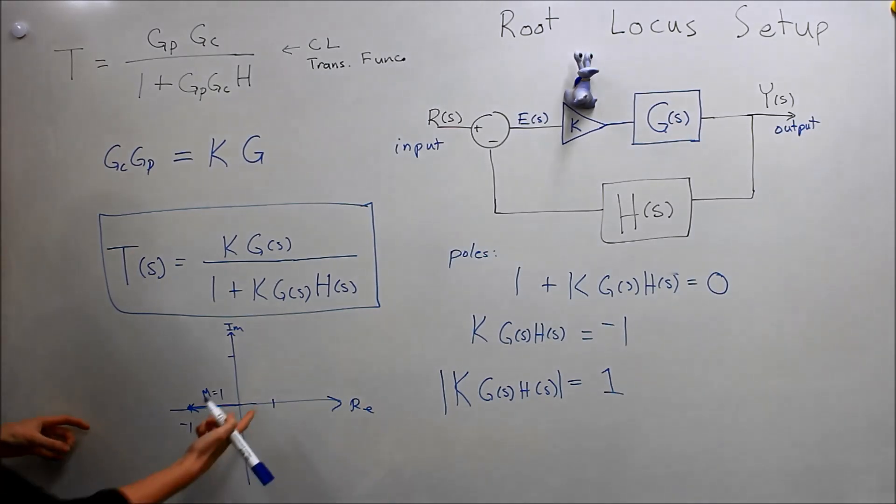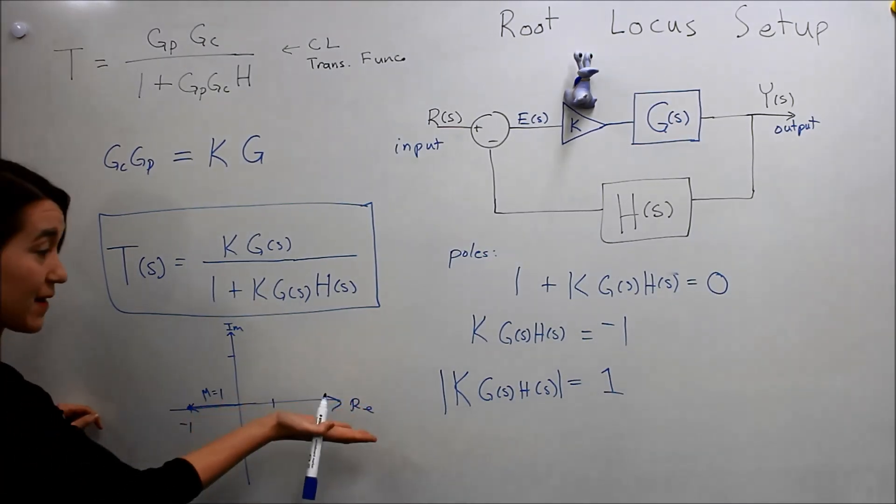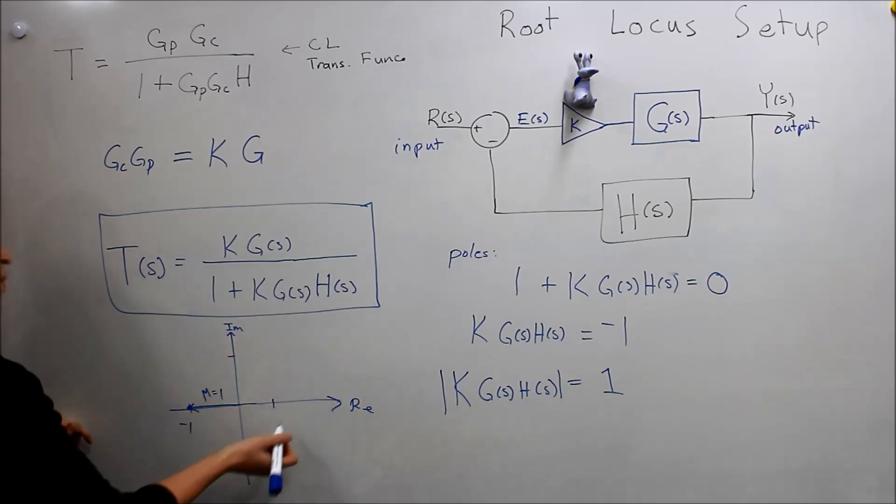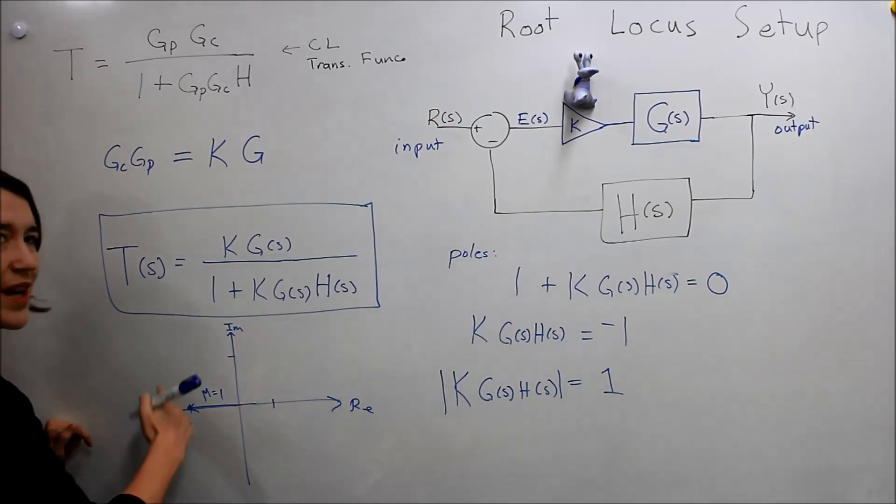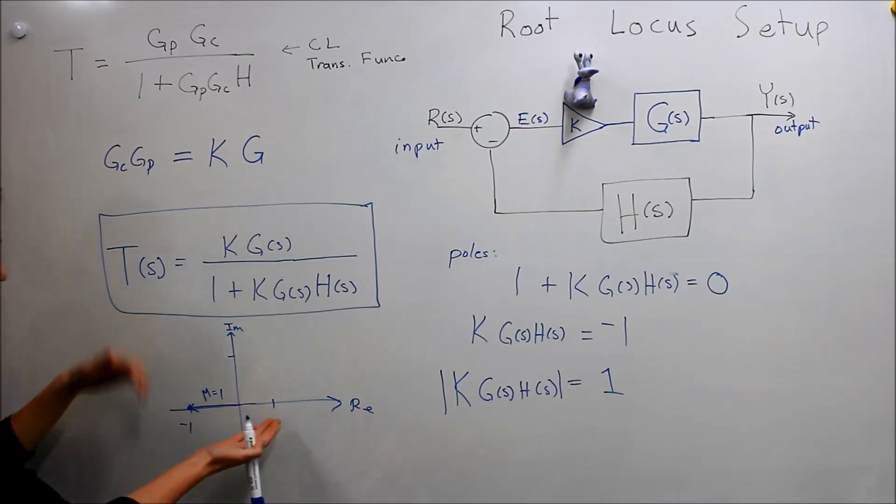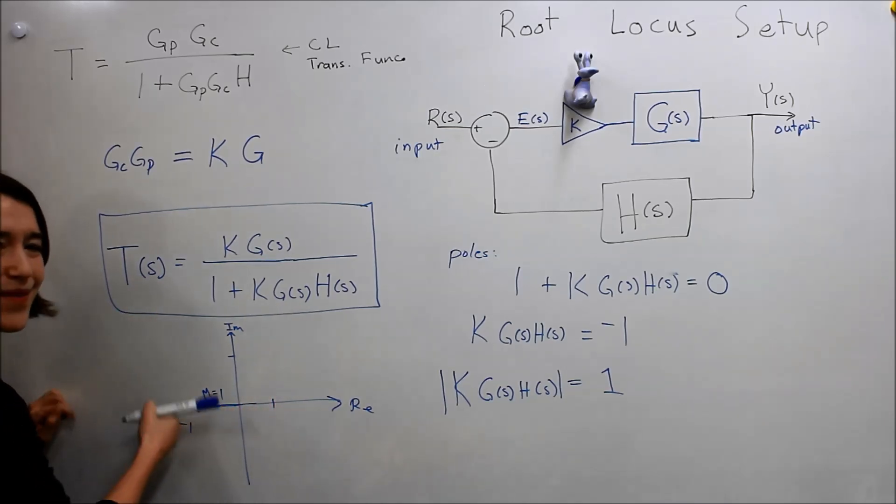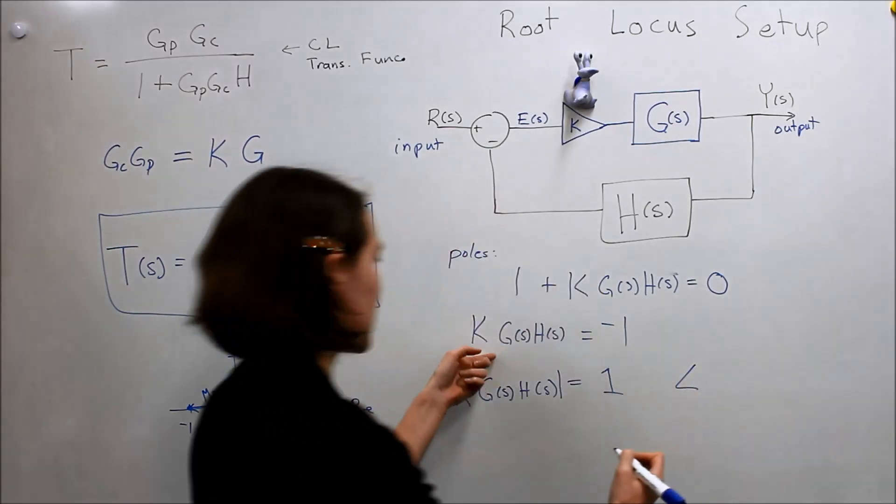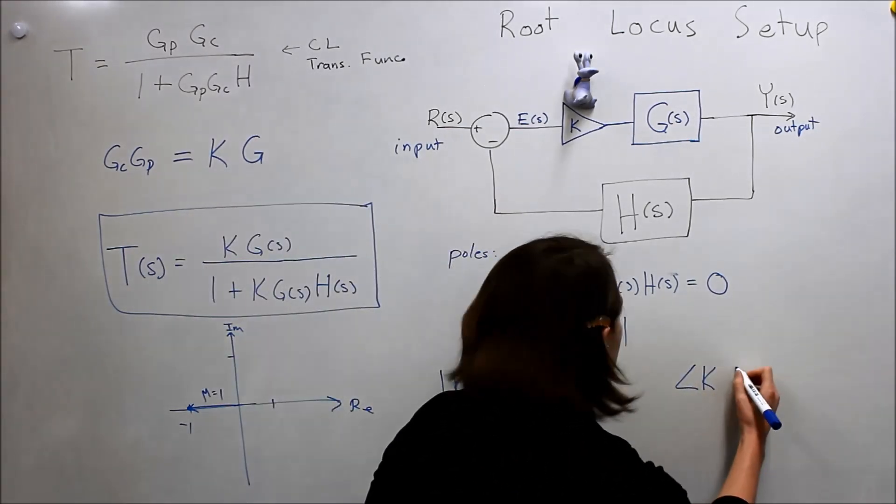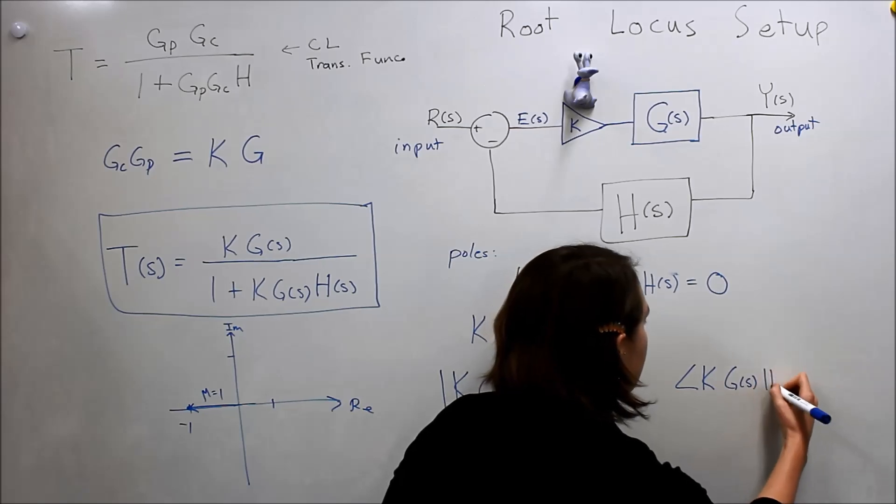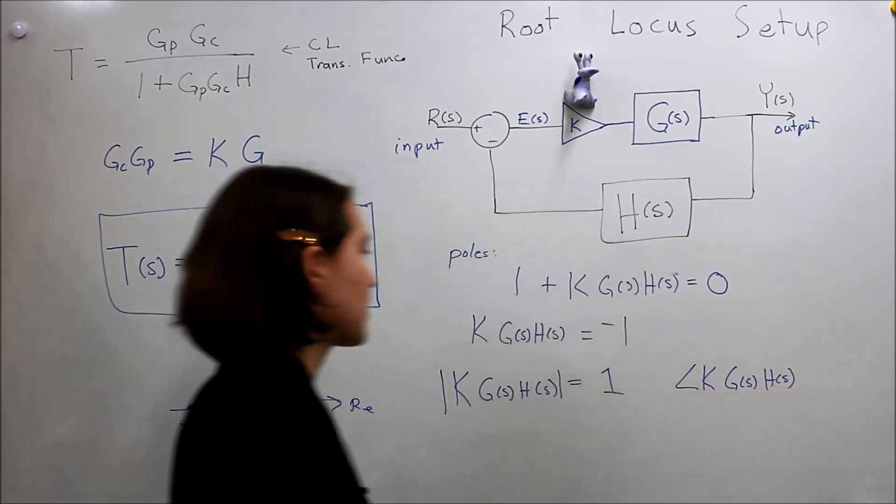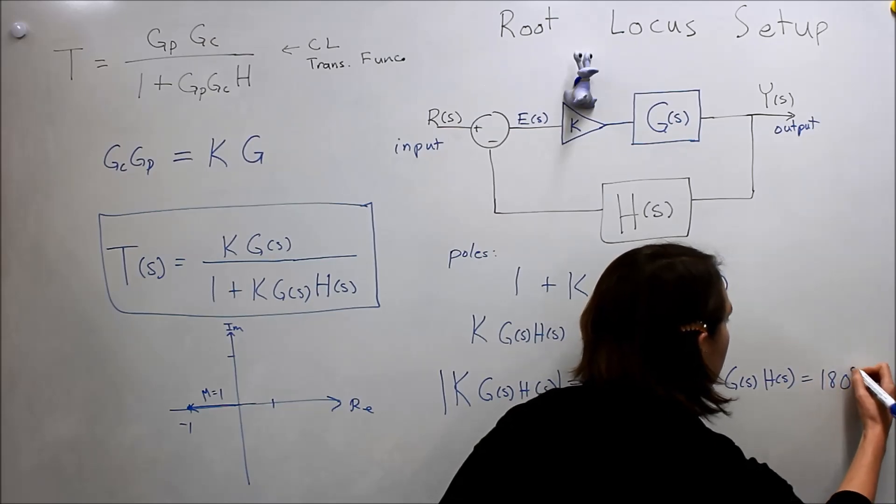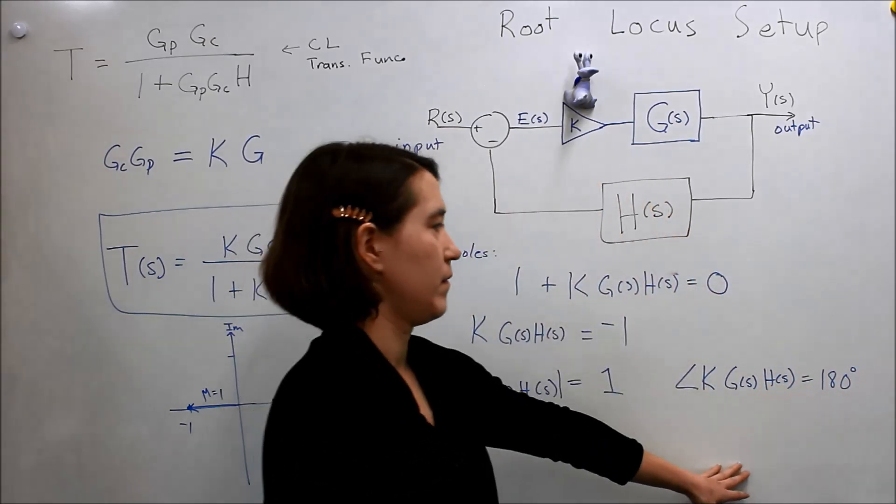And, if we look at the angle, the angle here relative to the real axis, the positive real axis, is exactly one. One-eighty. So, you can do positive one-eighty or negative one-eighty. But, it's going to be pointing to the left. So, we'll just call that one-eighty degrees. So, the angle of this whole expression here, G of S, H of S, has to be equal to one-eighty.